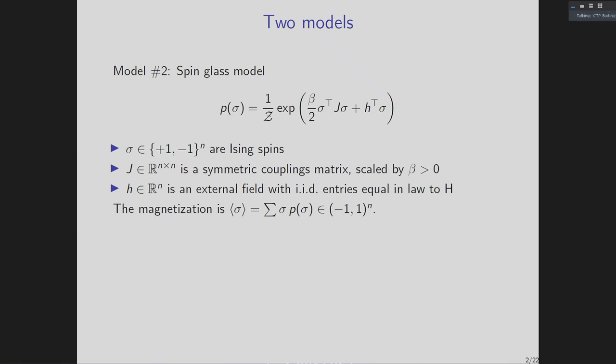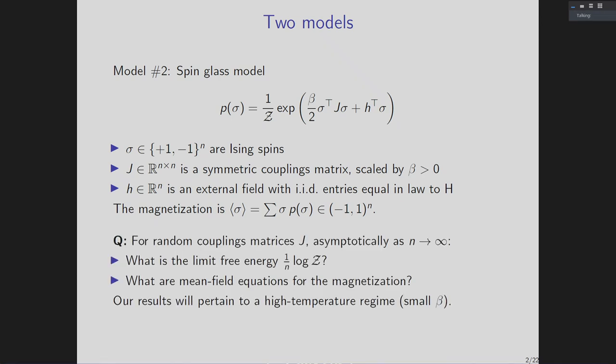If you have any questions during the talk, please do feel free to interrupt as we go. The questions we hope to address in this model are analogous: for certain models of the random couplings matrix J, as N goes to infinity, what is the limit of the normalized free energy (1/N times the log partition function)? And what system of mean field equations characterizes the magnetization? I should clarify right away that the results in this talk are restricted only to a high temperature regime — we won't talk about any low temperature phenomena.